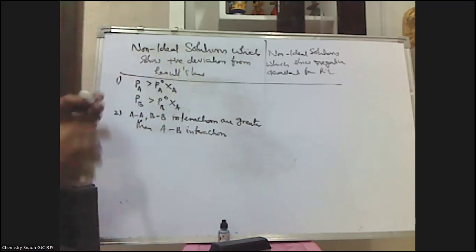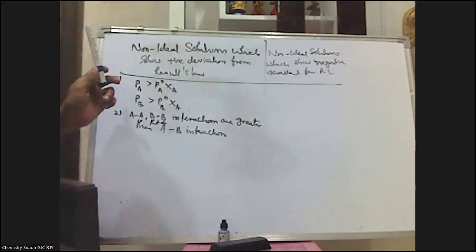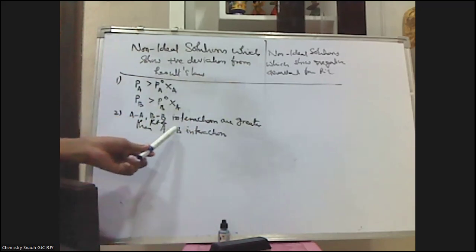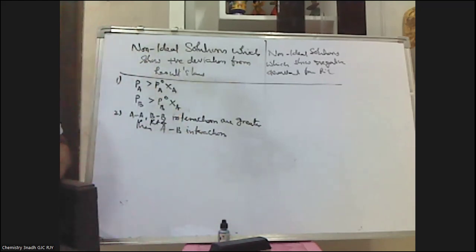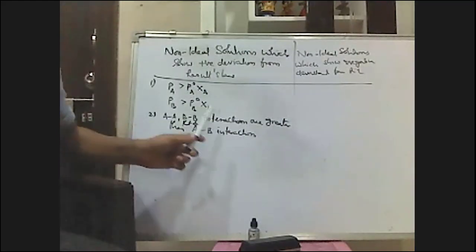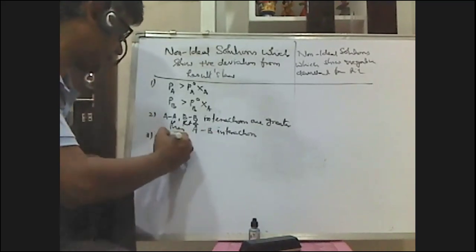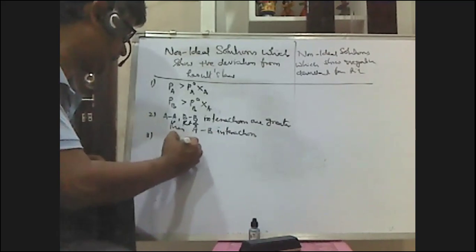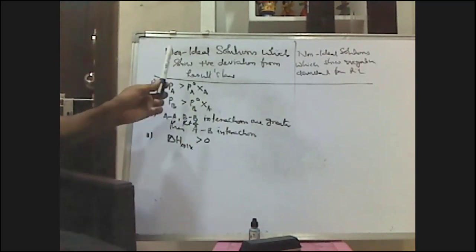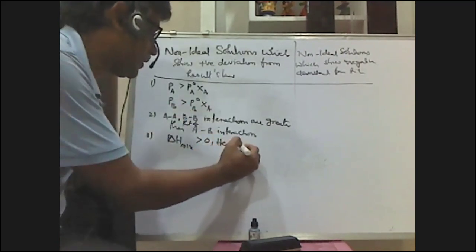For non-ideal solutions showing positive deviation, AA and BB interactions are greater than AB interactions. The attractive forces between like molecules (AA and BB) are stronger compared to AB attractive forces. The third characteristic is that ΔH mixing is greater than zero — that is, during the formation of these non-ideal solutions showing positive deviation from Raoult's law, heat is absorbed, meaning the process is endothermic.